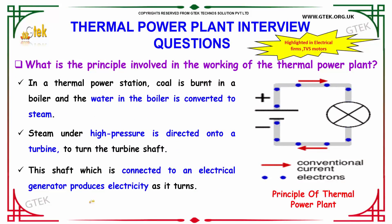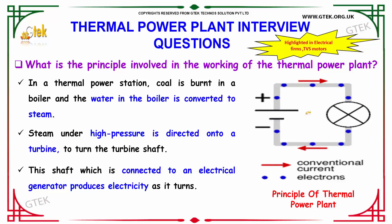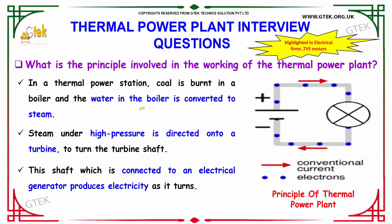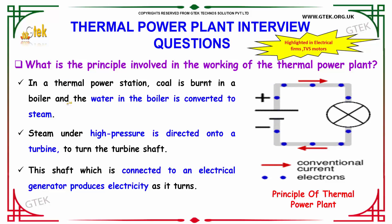What is the principle involved in the working of a thermal power plant? In a thermal power station, coal is burnt in a boiler and the water in the boiler is converted to steam. Steam under high pressure is directed onto a turbine to turn the turbine shaft. This shaft is connected to an electrical generator, which produces electricity as it turns.